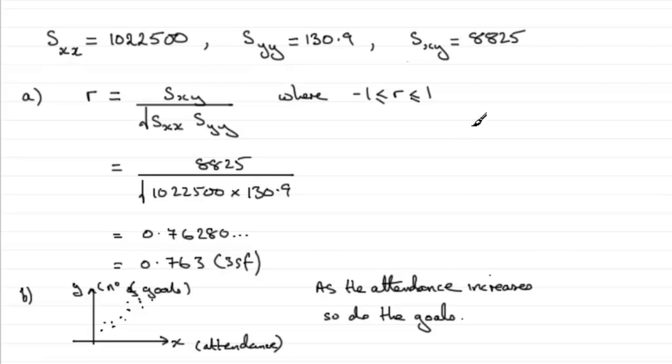Now we've got one more part, part C. Let's just put it in here. What happens now is that we've got to show what happens to the product moment correlation coefficient if we divide all the X values by 100.